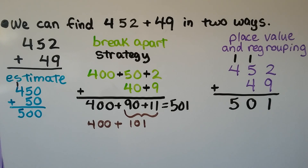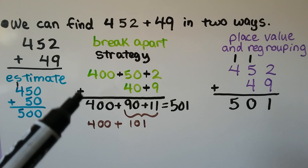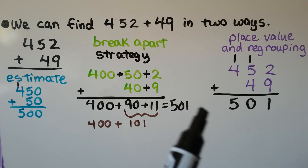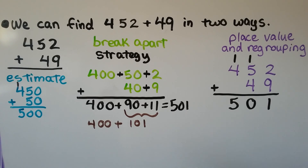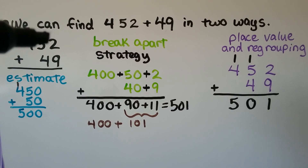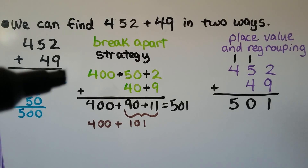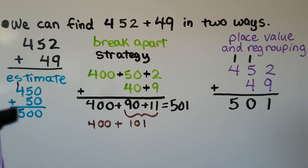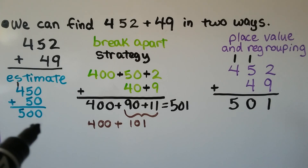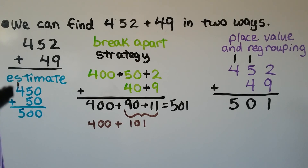We can find 452 plus 49 in two ways: the break apart strategy and place value with regrouping. First, we round to get an estimate. Rounding 452 to the nearest tens place, the two tells the five to stay the same, giving us 450. Rounding 49, the nine tells the four to go up to five, giving us 50. Adding 450 plus 50: five plus five is ten, regroup the one, so our estimate is about 500.